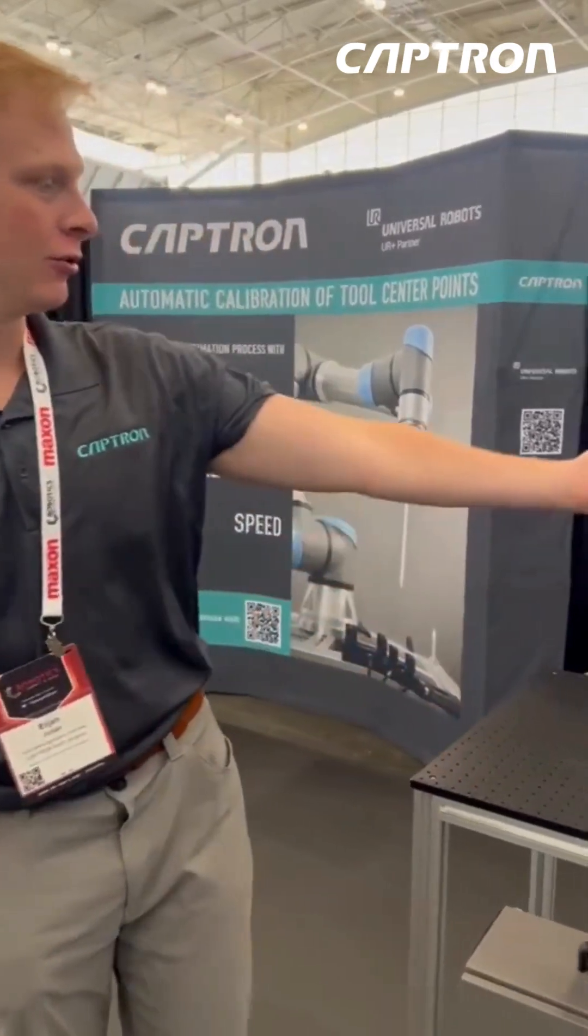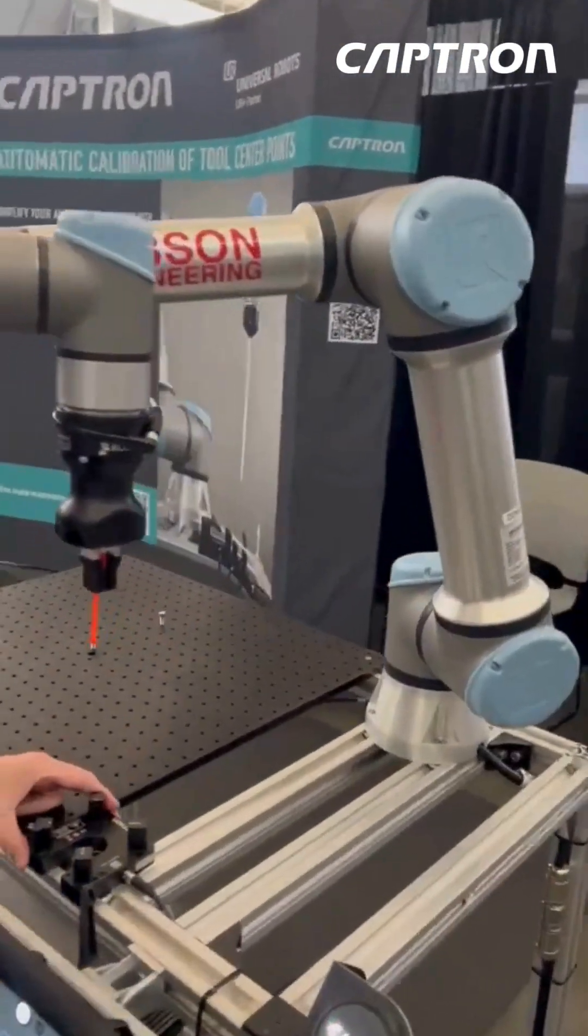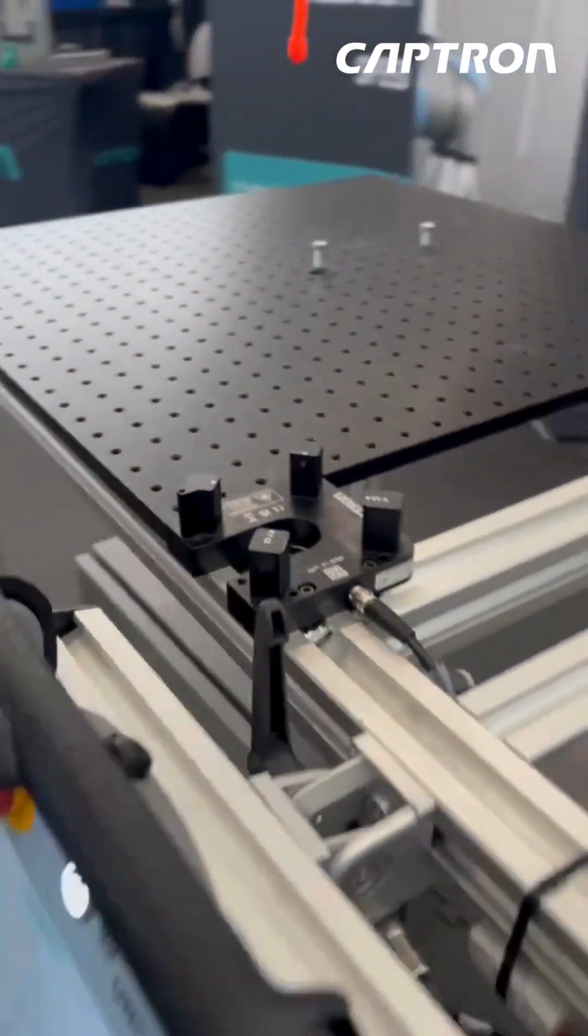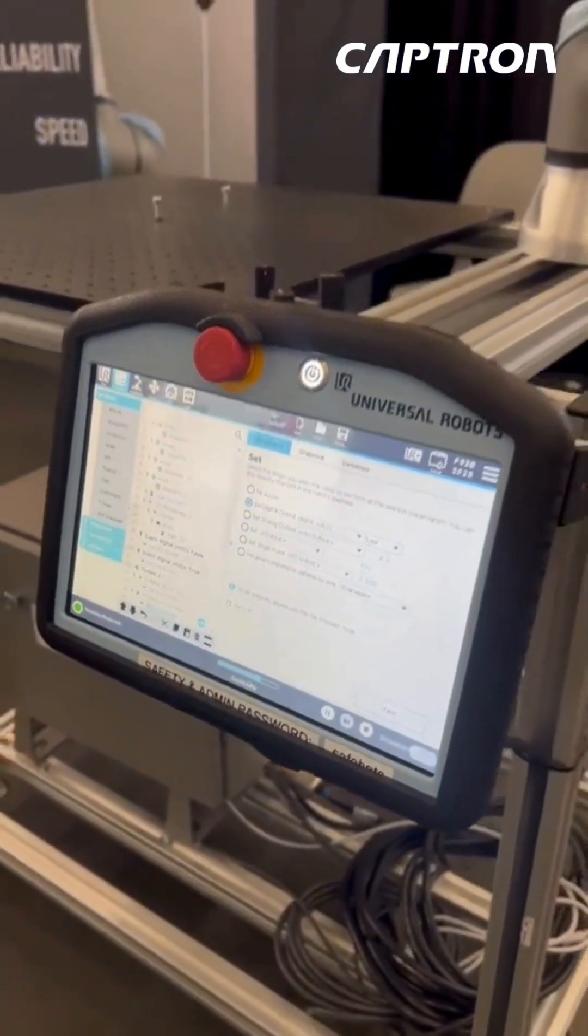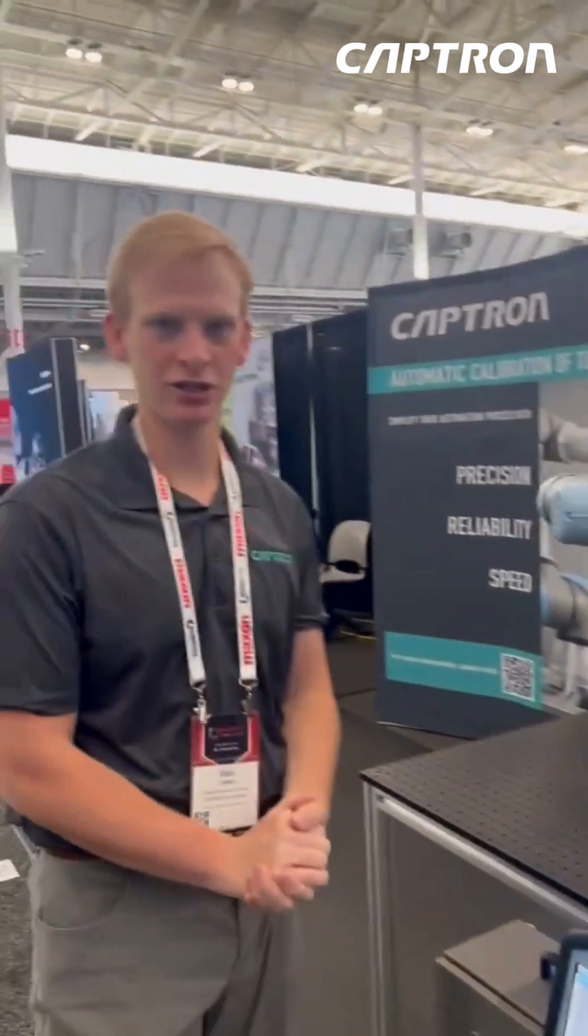So we have a UR5 robot right here paired with our optical sensor and our TCP recalibration software. Let's say you have a milling, dispensing, or welding application and you want to ensure accuracy and repeatability.